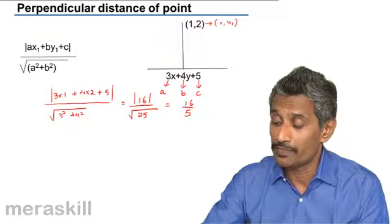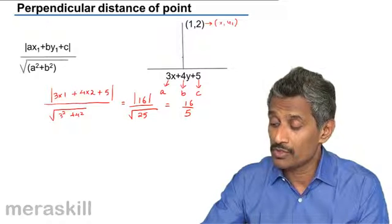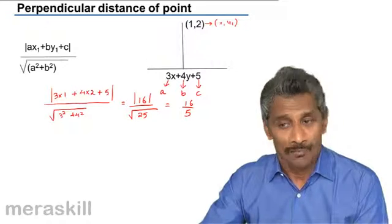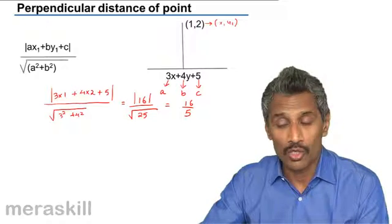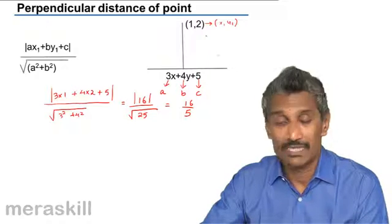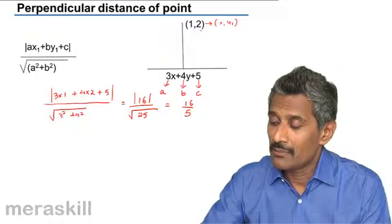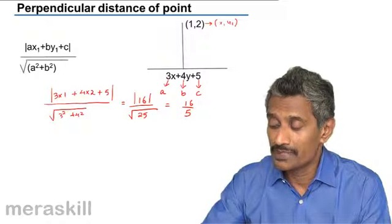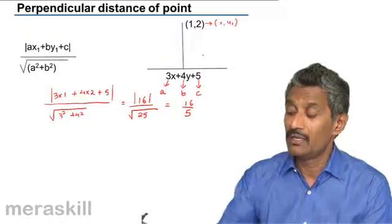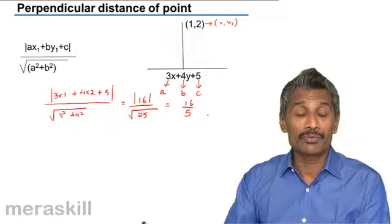So you just have to multiply the coefficient of x with the x coordinate of the given point, the coefficient of y with the y coordinate of the given point, add the constant in the equation, find that one's magnitude or absolute value, and divide by the sum of squares of the coefficients of x and y. That will give the distance between a point and a line.